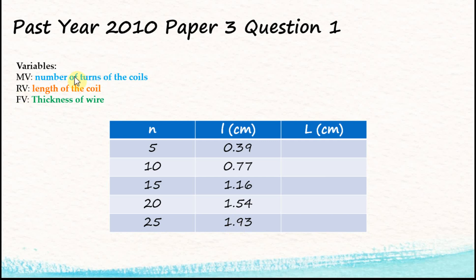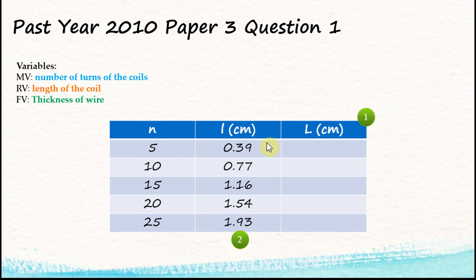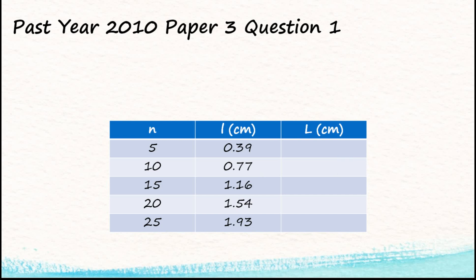In this table, the manipulated variable is the number of turns of the coil, n, and the responding variable is l. Make sure both the manipulated and responding variables are in the table, along with the third column for the calculation result. If all readings are correct you get two marks, if the table is complete with correct units you get one mark for completeness, and if all data are consistent — in this case all have two decimal places — you get one mark for consistency: four marks total.